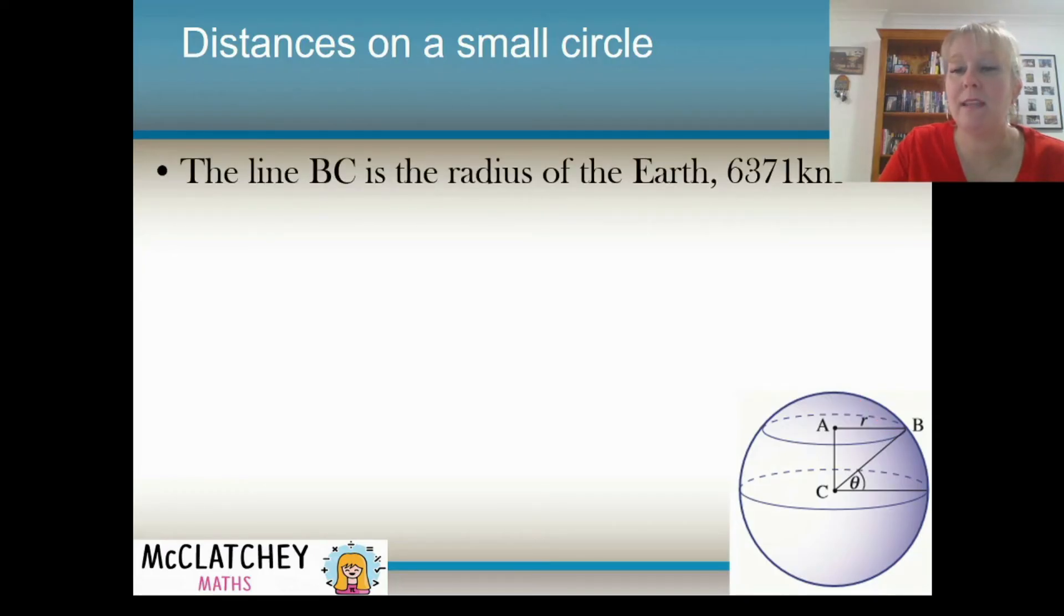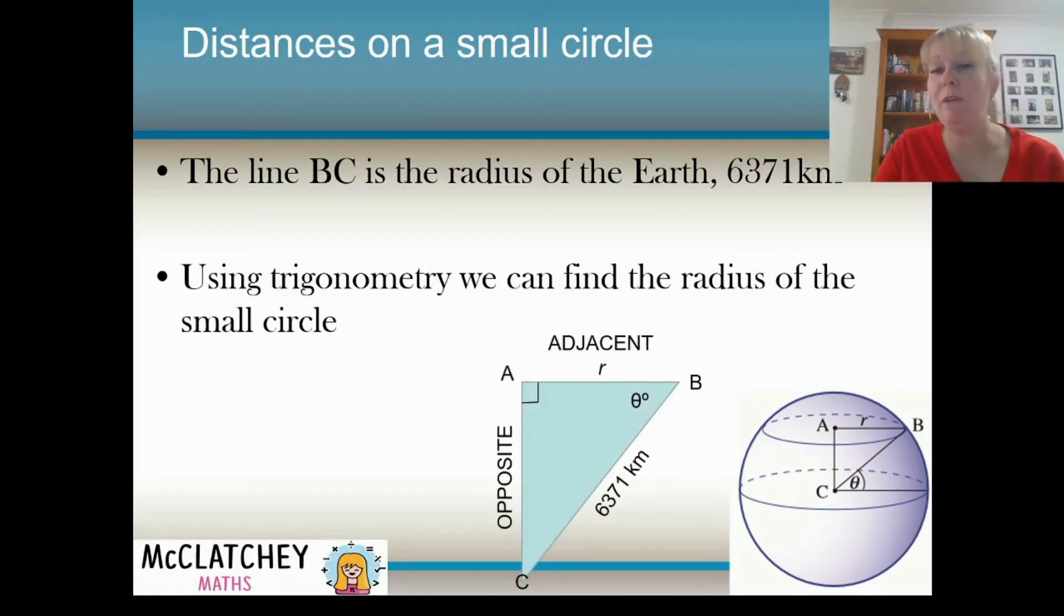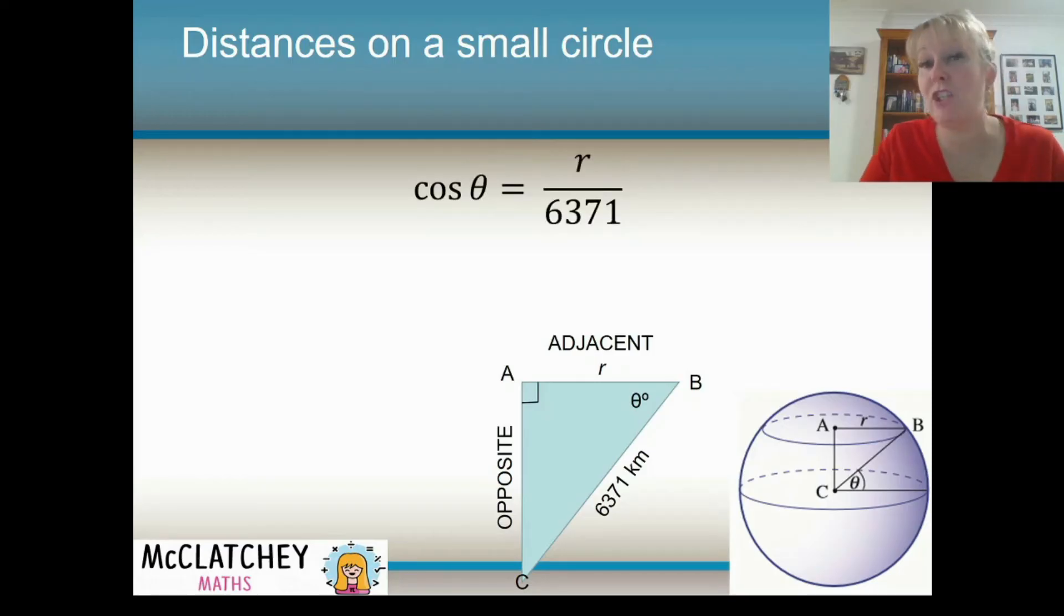So now we've got ourselves a triangle. We've got that radius BC, which is the center, the radius of the earth. And using trigonometry, we can find the radius of that small circle. So I've extended that little triangle out here. We've got the radius of the earth, which is CB, 6,371 kilometers. We've got that angle theta sitting inside the triangle, and we've got the value of the radius of the small circle that we want to find, the little letter r. So we've got an adjacent, and we've got a hypotenuse. So using our knowledge of trigonometry, SOHCAHTOA, we know that cosine uses an adjacent and a hypotenuse.